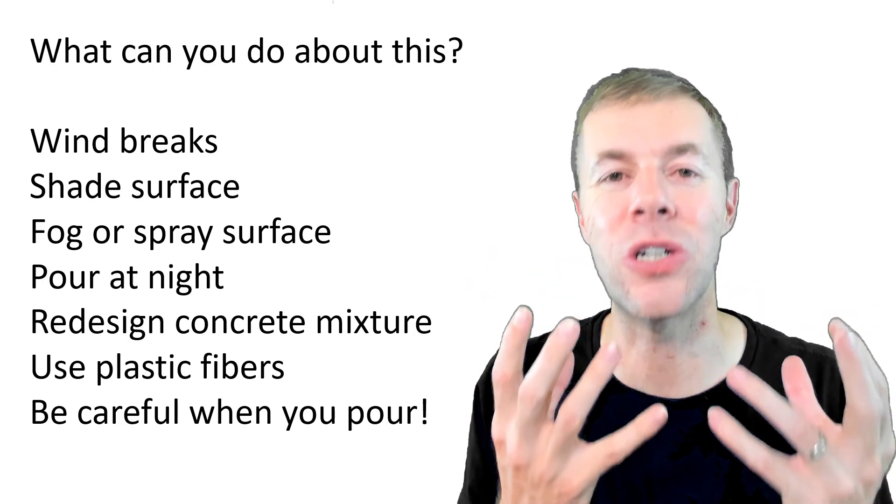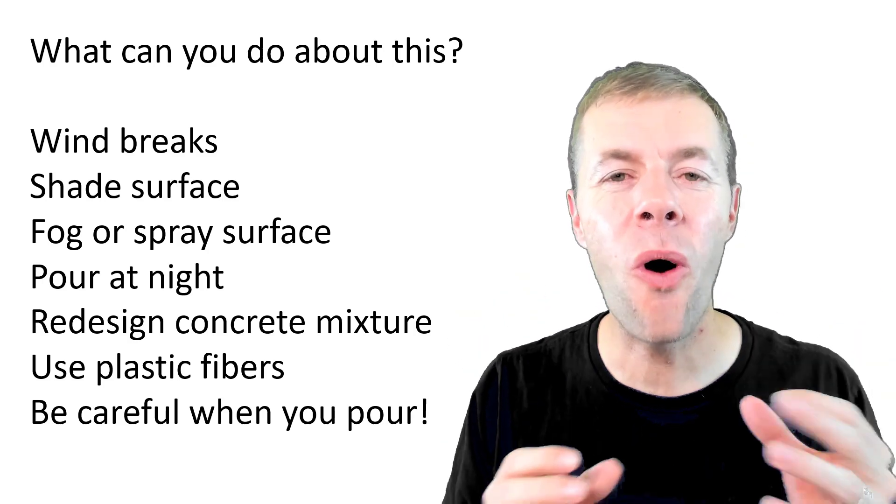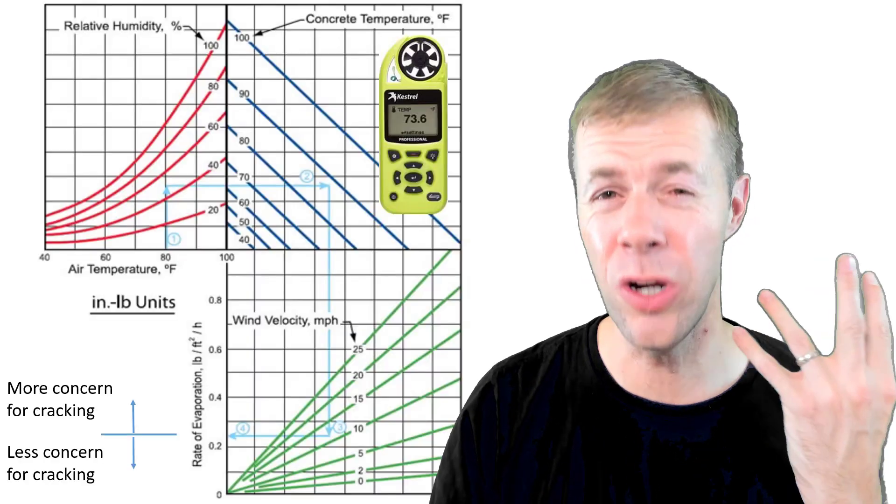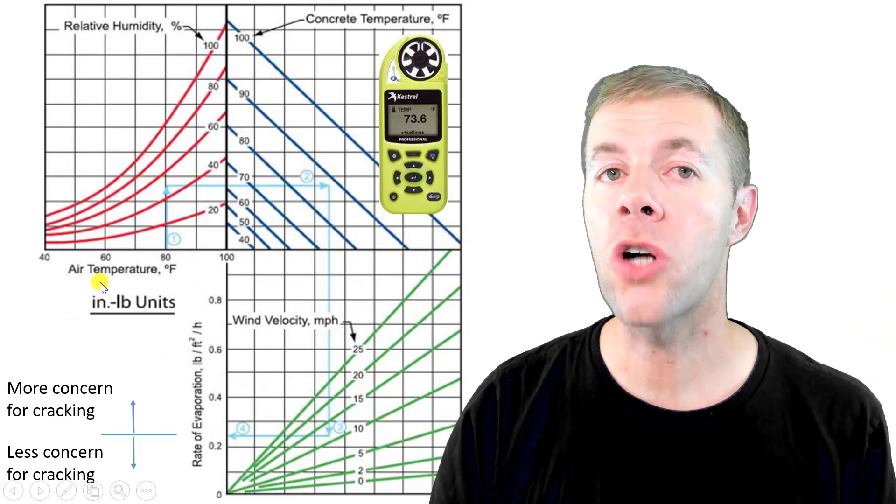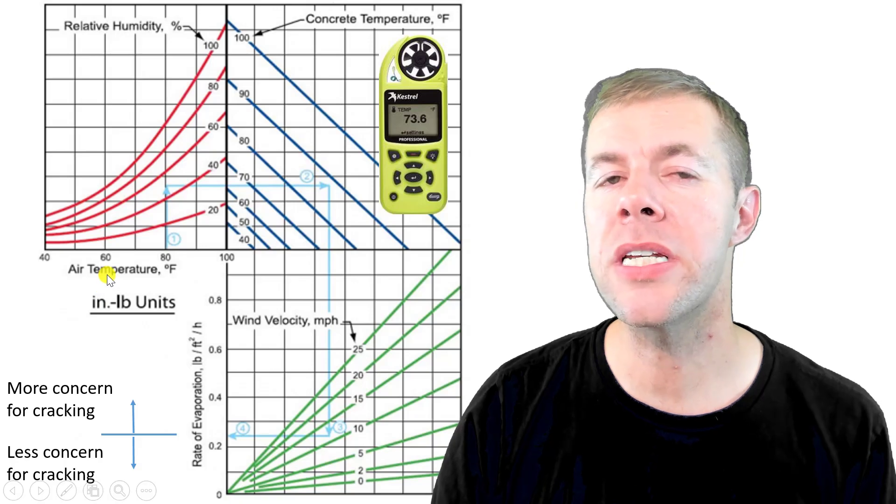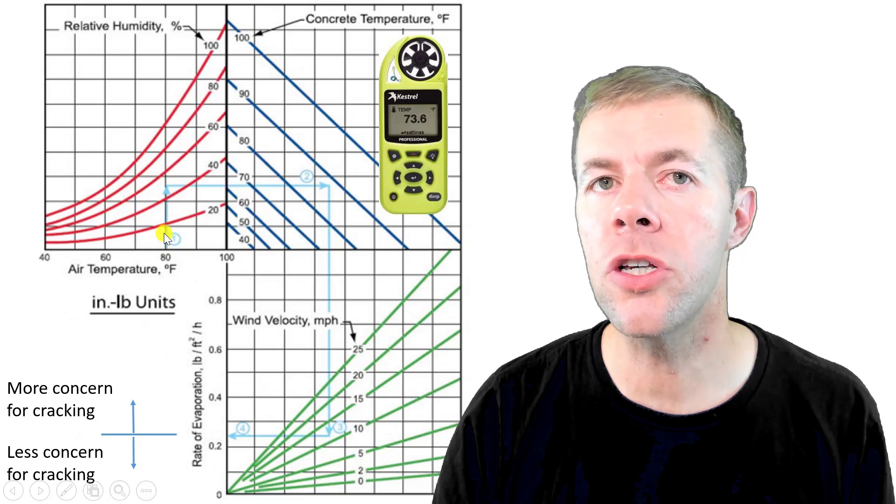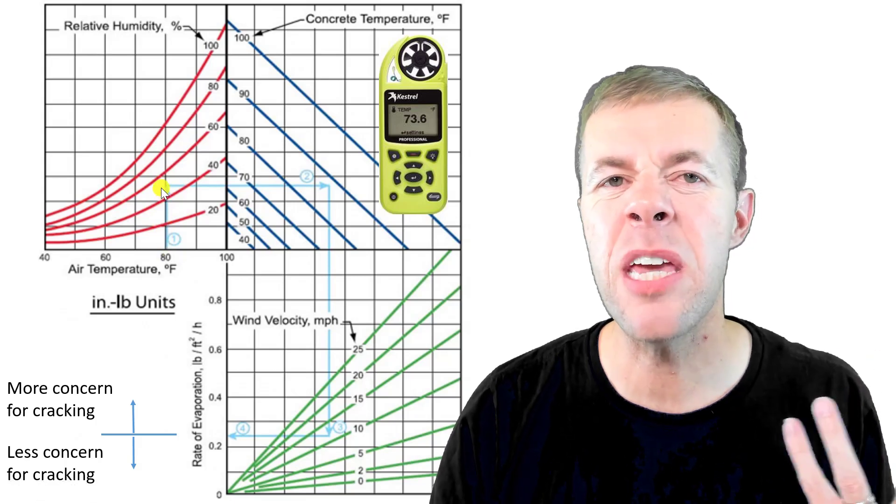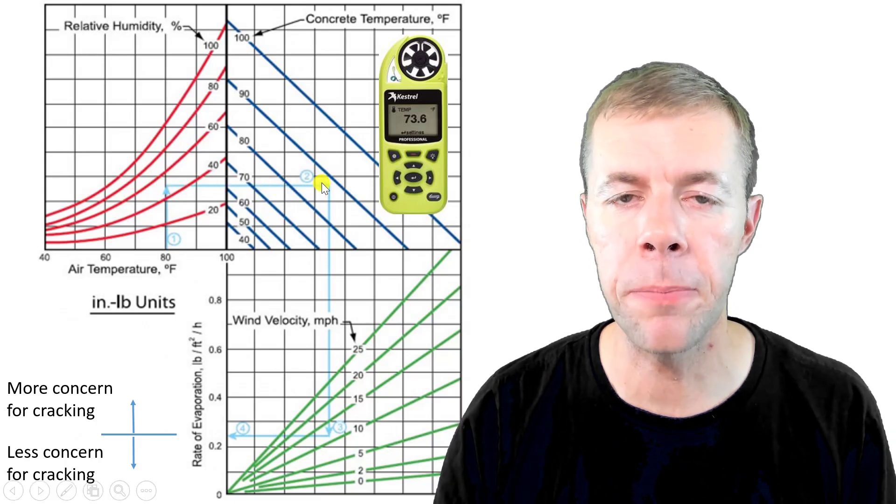As engineers, we can be very nerdy and come up with all kinds of crazy equations to explain this. We've done it with this thing called a nomograph. This is pretty crazy. You come in here and start at this point. You look up the temperature in the air, maybe it's 80 degrees. Then you come up till you hit your relative humidity. In this example, it may be about 50%.